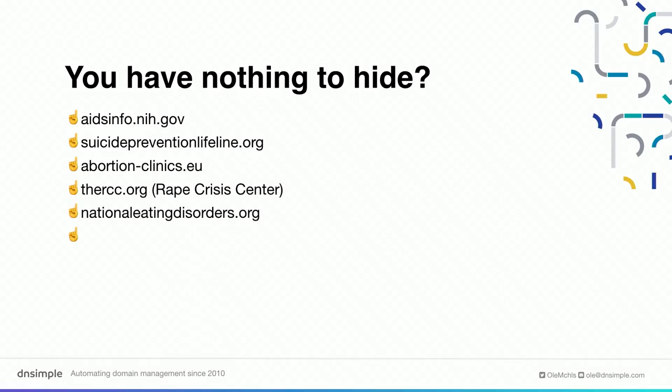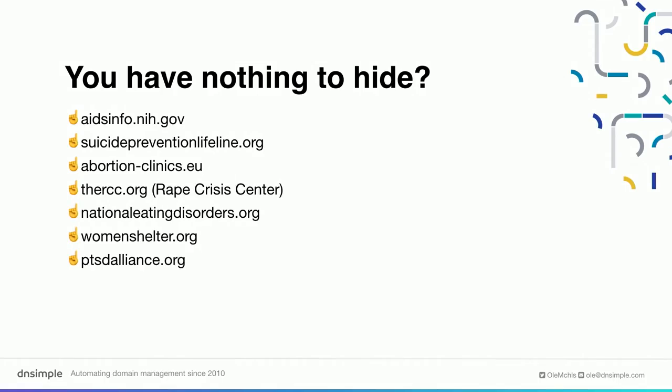Usually the next response is, well, I have nothing to hide. And I'm pretty sure you do have something to hide — and if you don't have it yet, you may be in a situation in your life where you will. When you say you have nothing to hide, what about visiting one of these sites? Do you want Google to know you're visiting a rape crisis center? Do you want them to know you're visiting a suicide prevention hotline, a women's shelter, AIDS info, or an abortion clinic? All of this is public on the internet — everyone that can intercept your traffic can see that.